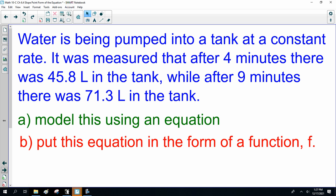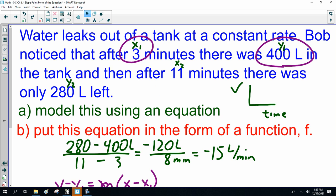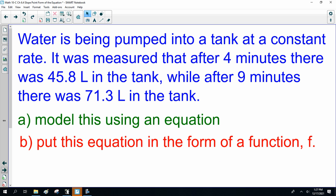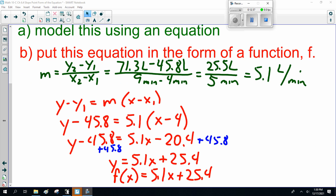Now, I know this is getting long, so let's just quickly do this one. Water is being pumped into a tank at a constant rate. It was measured that after four minutes was 45.8 liters, and after nine minutes, 31.3. So, model this using an equation. Put this equation in the form of function f. I'm going to pause the recording. I want you guys to turn this just like we did back here. Turn it into an equation, then turn it into a function.